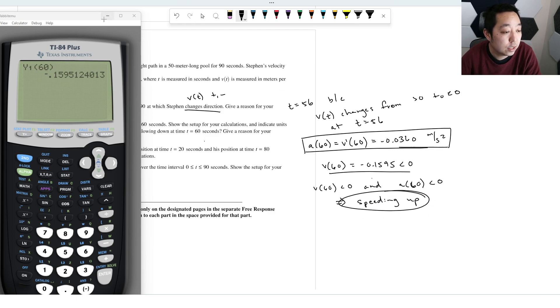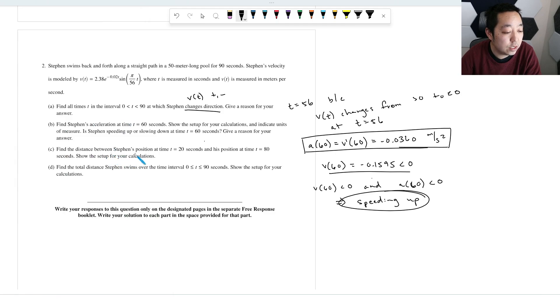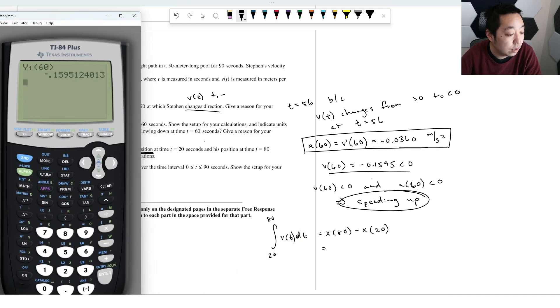So that's how we determine if something's speeding up or slowing down. Find the distance between Stephen's position at t equals 20 seconds position at time t equals 80. Show the setups for your calculation. So the distance between the positions is the displacement, change in position. That's going to be the integral of the velocity, because that's going to be, if you do from 20 to 80, that's literally going to be x of 80 minus x of 20 by fundamental theorem of calculus. So we're just going to compute this integral on our calculator. So we're going to do math, integrate,